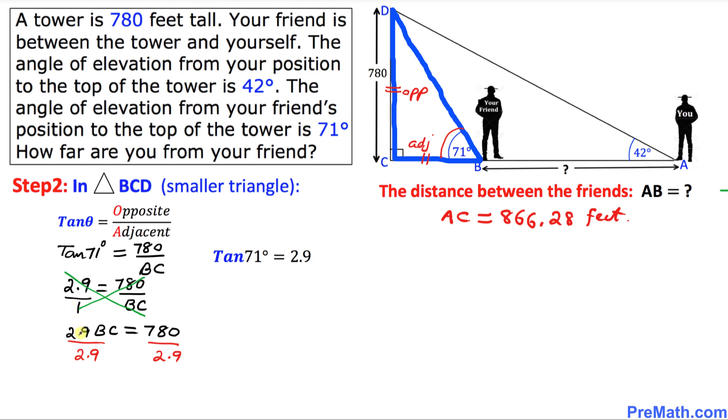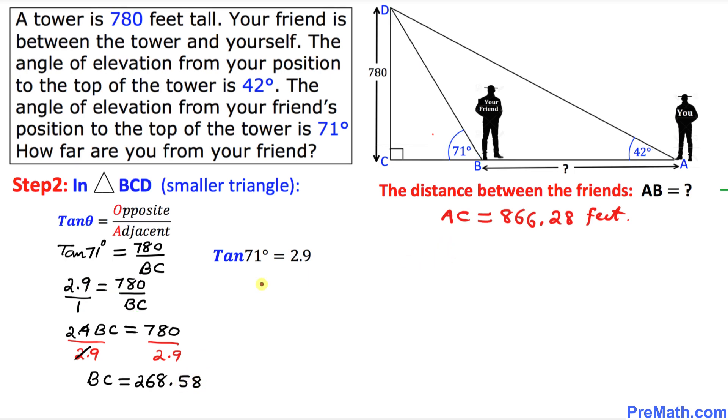Since I want to isolate BC, I'm going to divide by 2.9 on both sides. So that means this cancels out. So BC turns out to be simply, if you divide these numbers we're going to get 268.58. So thus I'm going to write down this BC right up here. BC equal to 268.58 feet.